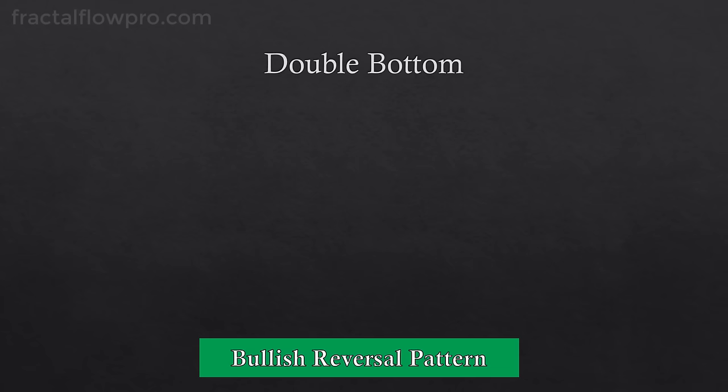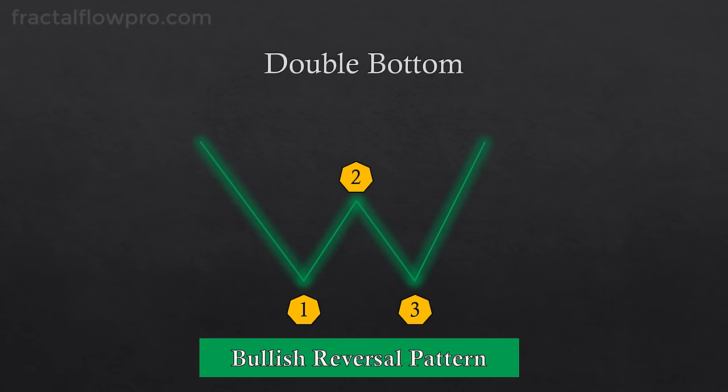Next in line, we have a bullish reversal pattern called double bottom, and as the name suggests, it's formed by two lows that sit in the same price level. The double bottom is confirmed when the breakout line that comes out of number 2 is broken to the upside. The logic behind this pattern lies in the simple mechanics of highs and lows in the chart. A double bottom means that there are two lows hitting the same level, and that means that the second low failed to go below the first one. This is a sign of weakness of the sellers because they were not able to surpass the last level they created themselves.